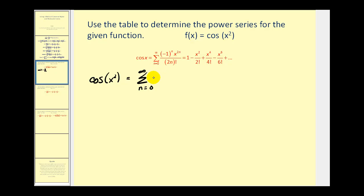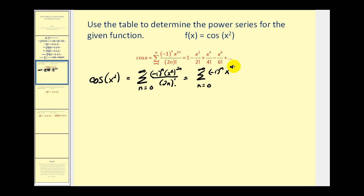So we'll still have negative one to the nth, and here we'll have x squared to the power of two n divided by two n factorial. Simplifying, since we have a power raised to a power we multiply the exponents, giving us x to the four n divided by two n factorial.